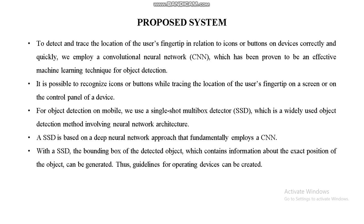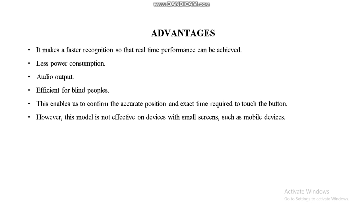It is possible to recognize icons or buttons while tracing the location of the user's fingertip on a screen or on the control panel of any device. We use an SSD-based deep neural network approach that fundamentally employs a CNN — convolutional neural network. Skylines for operating devices can be created to help visibly impaired persons use smart devices. Advantages include less power consumption, audio output, and efficiency for blind people, enabling confirmation of the accurate position and exact time required to touch buttons on smart devices. However, this model is not effective on devices with small screens such as mobile devices.